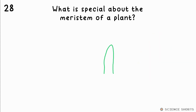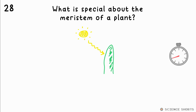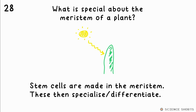Question 28. What is special about the meristem of a plant? The meristem is where new cells are made. These are stem cells, which then specialise or differentiate to carry out a specific function.